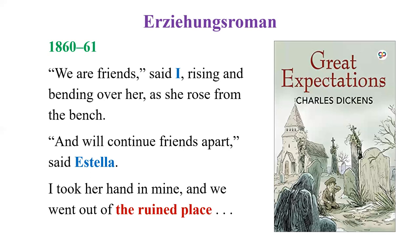A possible exam question: what is the name of the house where Miss Havisham lived? In the original ending, Pip and Estella do not come together, but in the revised ending by Dickens there is a kind of happy ending. The novel was published in 1860-1861 in serial form. In the revised ending, sitting in front of the ruins of Miss Havisham's house, Pip says: 'We are friends, said I, rising and bending over her as she rose from the bench, and will continue friends apart, said Estella. I took her hand in mine and we went out of the ruined place.' This implies they will start a new life together after their tragedies.